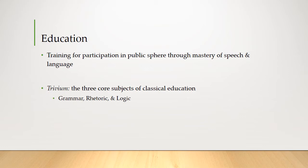Their education system reflects this reality. It was largely geared towards training people to participate in the public sphere through mastery of speech and language — learning how to speak, understanding language in a very deep way, being able to present oneself publicly. The three core subjects of the classical education in this period, known as the trivium, or the three, were grammar, rhetoric, and logic: the way words are organized, the way one can speak in order to persuade, and the way to form arguments. Their education is centered on language, argument, persuasion.